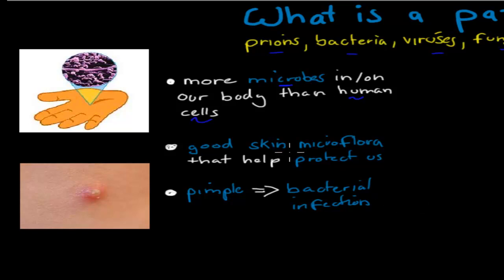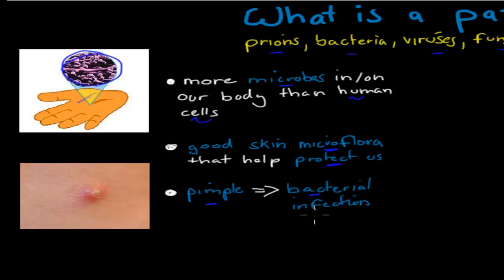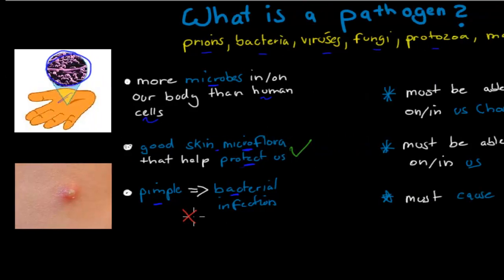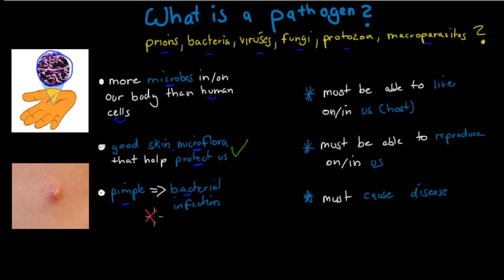We've got lots of good skin microflora — microflora is just a group of microbes, very microscopic little organisms that help protect us. If we have a healthy microflora, then we have protection against infection. If we were to look at our skin under a microscope, we'd see many different types of microbes. But we also see things like pimples, which most of you would have gotten at some stage — and that would be an example of a bacterial infection, a microbe that has caused disease. So some bacteria are good and protect us, whereas other bacteria cause disease. This is one of the big differences between a normal microbe and a pathogen.